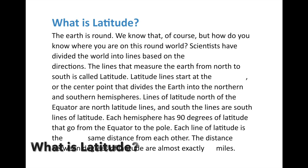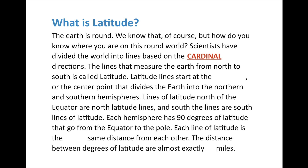So as you know, the Earth is round. But how do you know where you are in the round world? Well, scientists have divided the world into lines based on the cardinal directions. Remember, cardinal directions are north, south, east, and west. So we're going to take these lines one at a time.